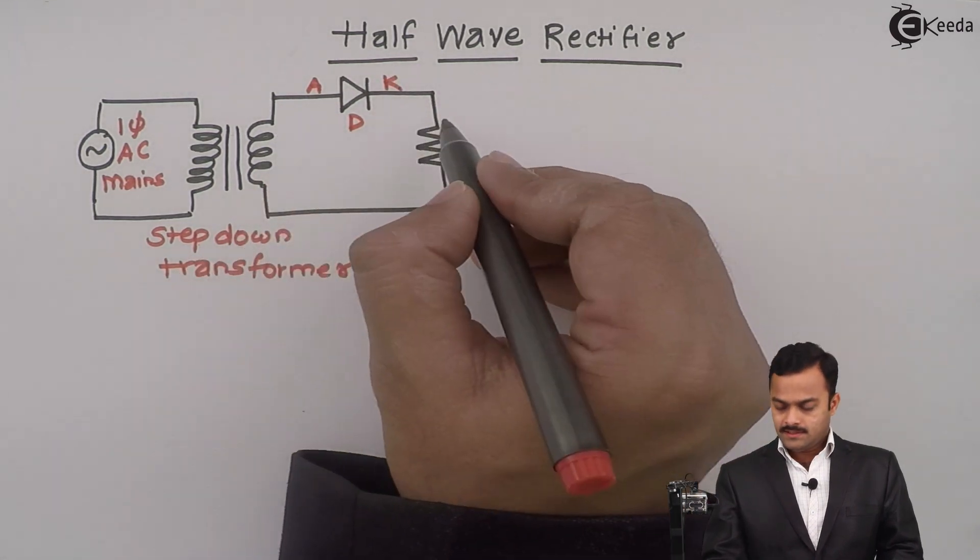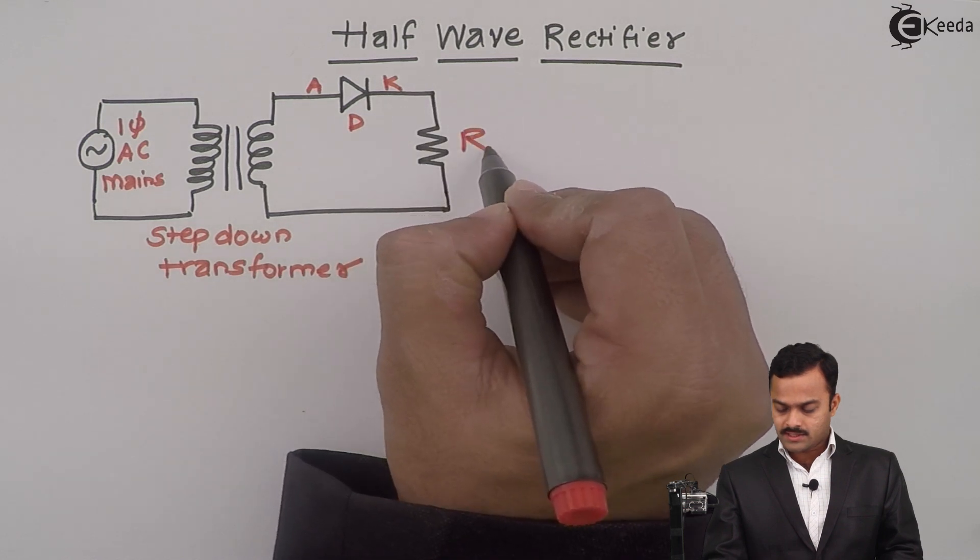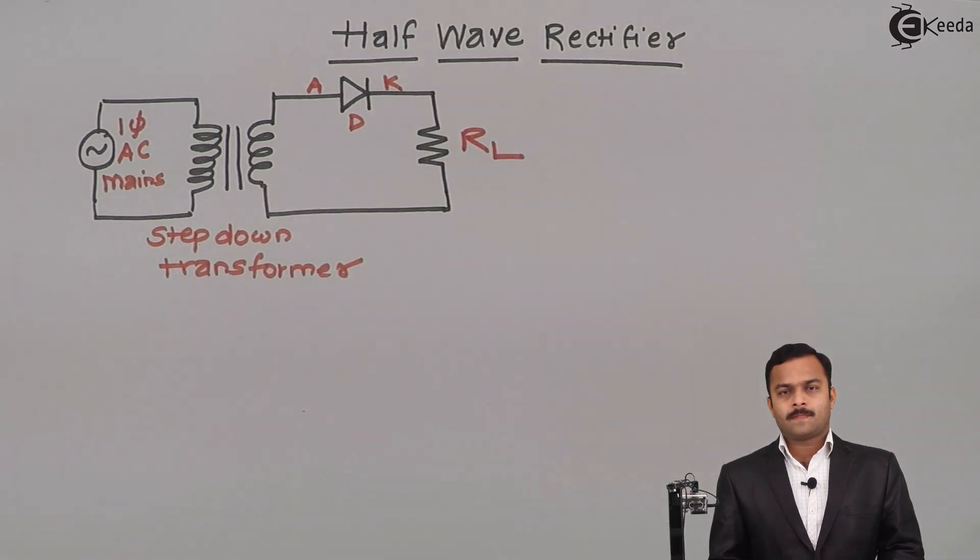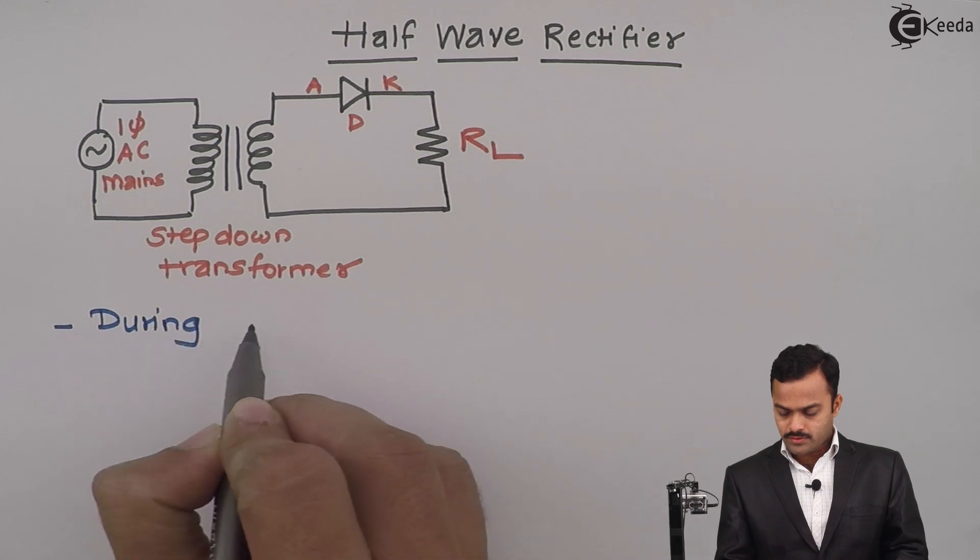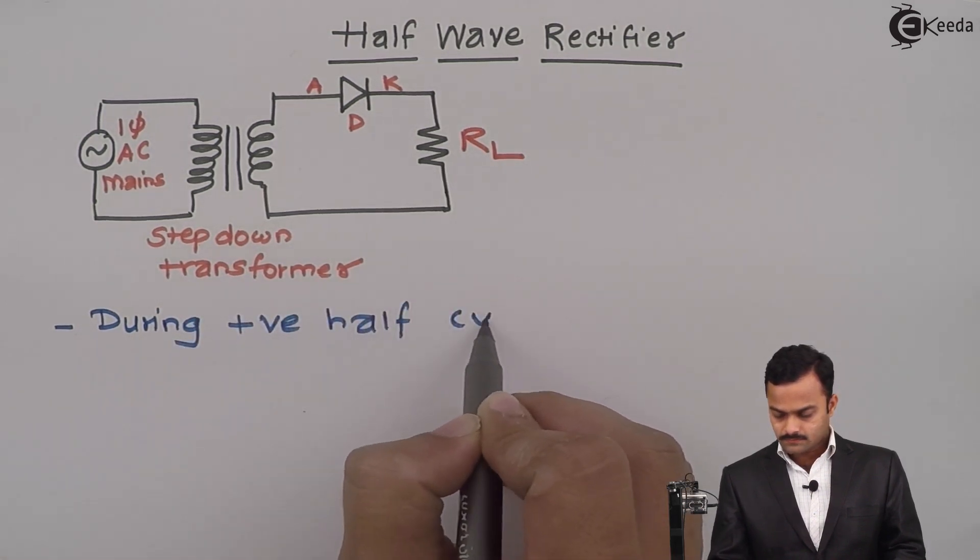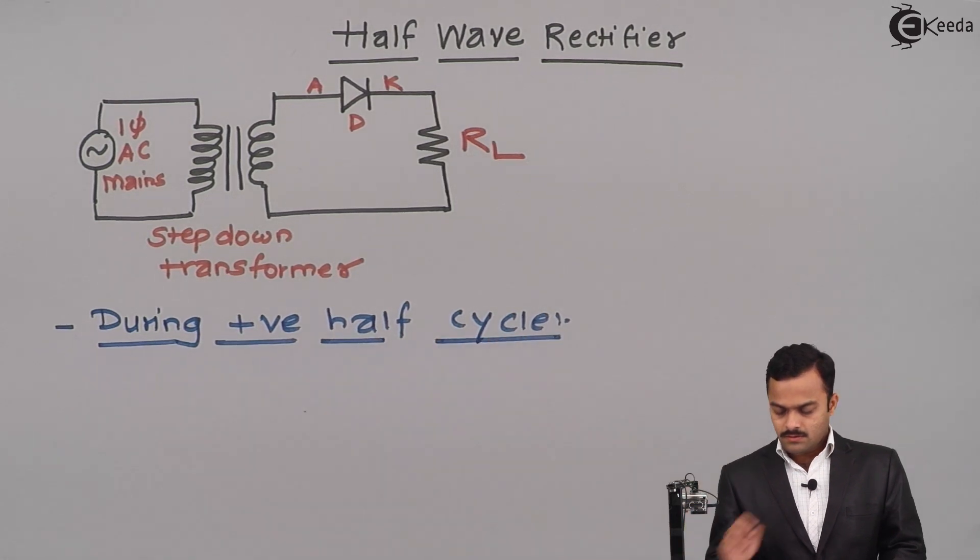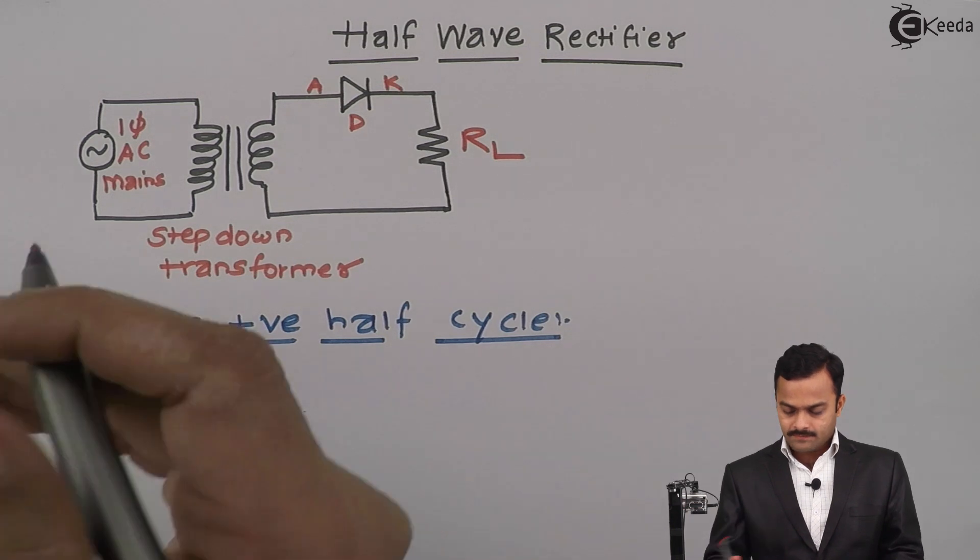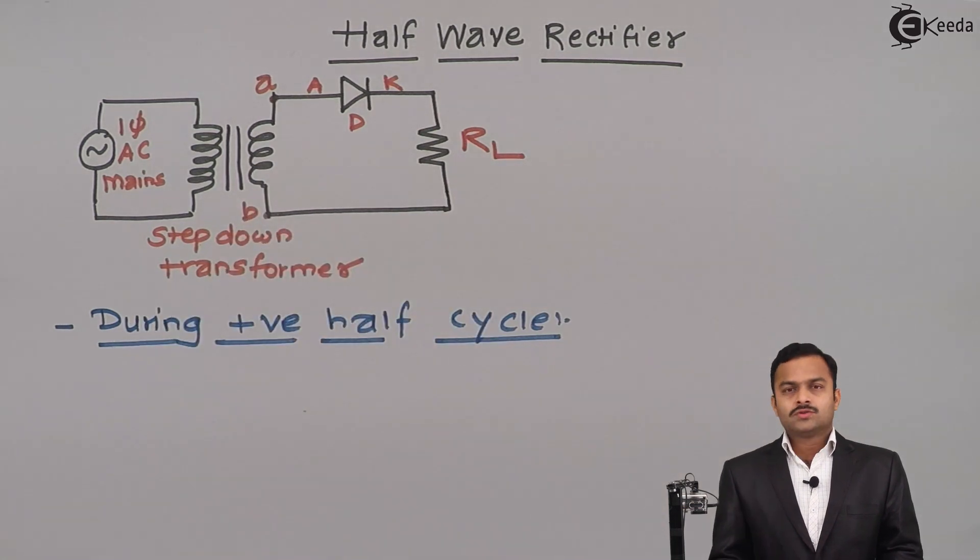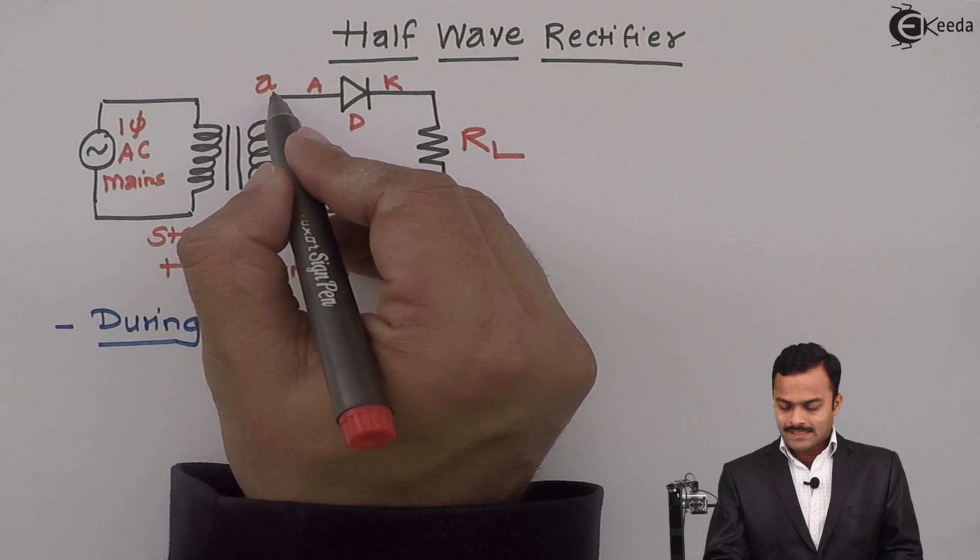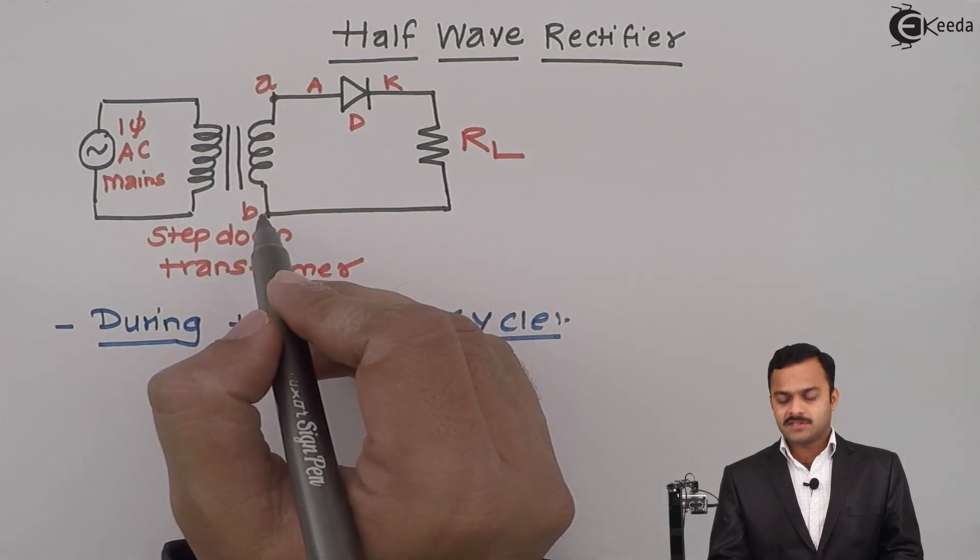Finally, the diode is connected to the load resistance RL. Now let's discuss its working. There are two parts: one is during positive half cycle. So what happens during the positive half cycle? If I consider this point as A and this point as B, during positive half cycle point A is positive with respect to point B.